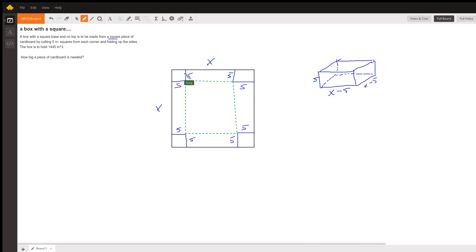The key is realizing that if I cut a five-inch square out of each corner, that the new dimension right here will be X minus 10. That's like the width of the box, and similarly, this dimension right here will be X minus 10.